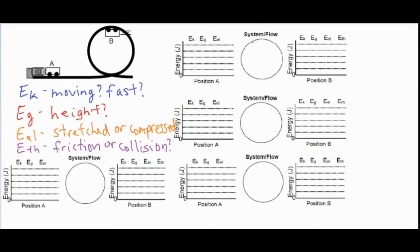Let's go ahead and get started with our first diagram. We have EK, EG, EL at the beginning and at the end, and also some thermal energy at the end, and we're looking at position A and B. We're going to look at four different sets of energy bar graphs describing the same situation — each one dependent on some different factors.